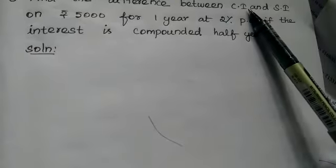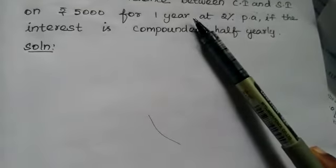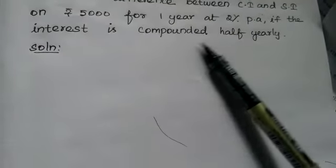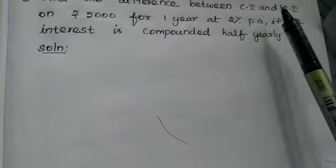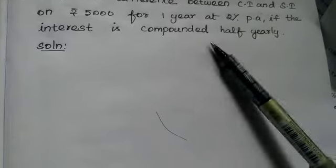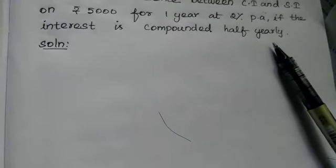This is the difference for rupees 5000 for 1 year at 2% compounded half yearly. The difference between CI and SI for 2 years - you know the formula P into R by 100 the whole square.